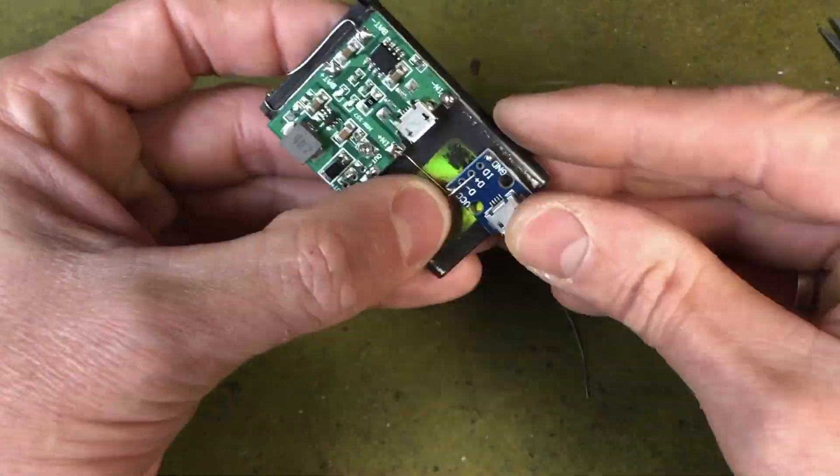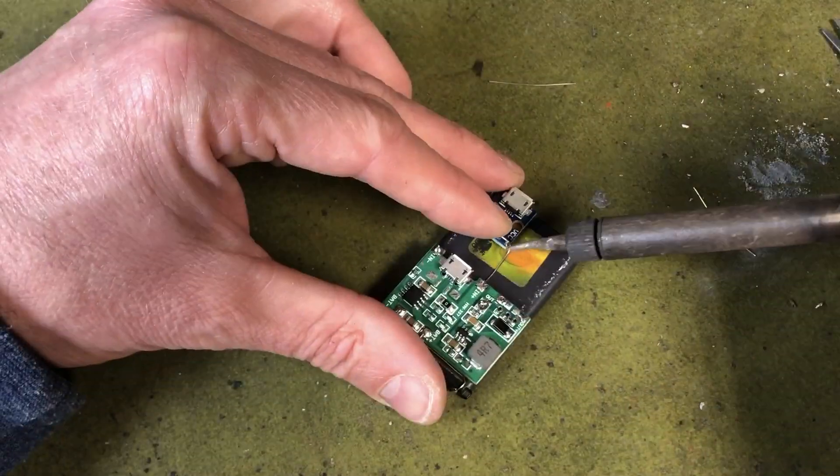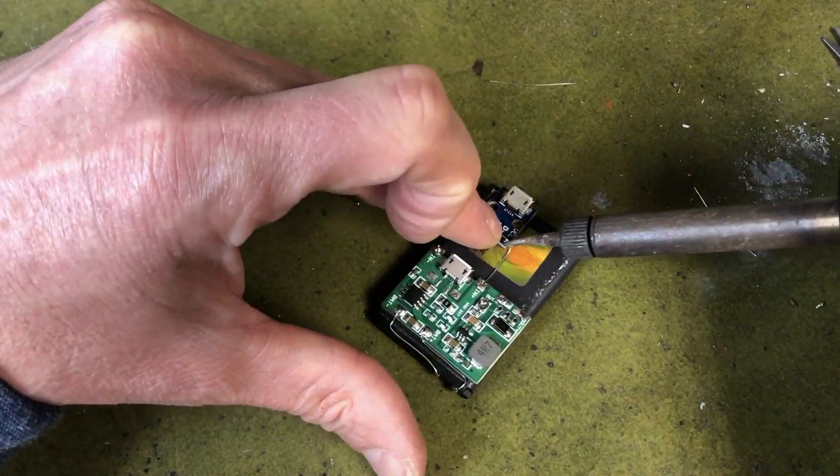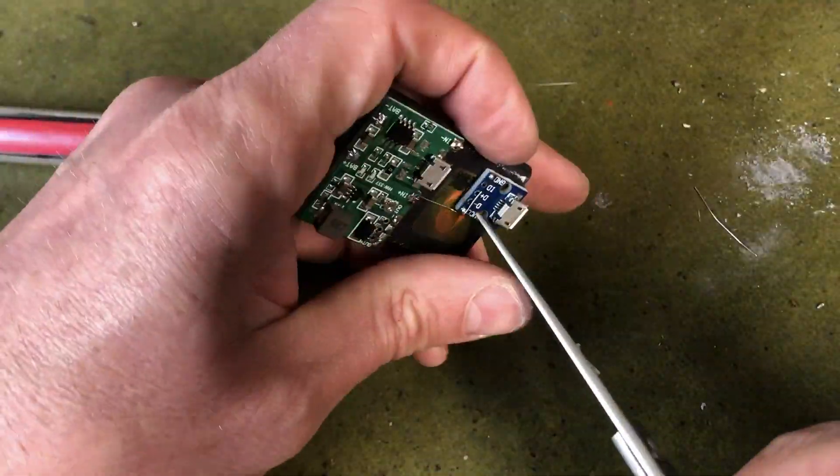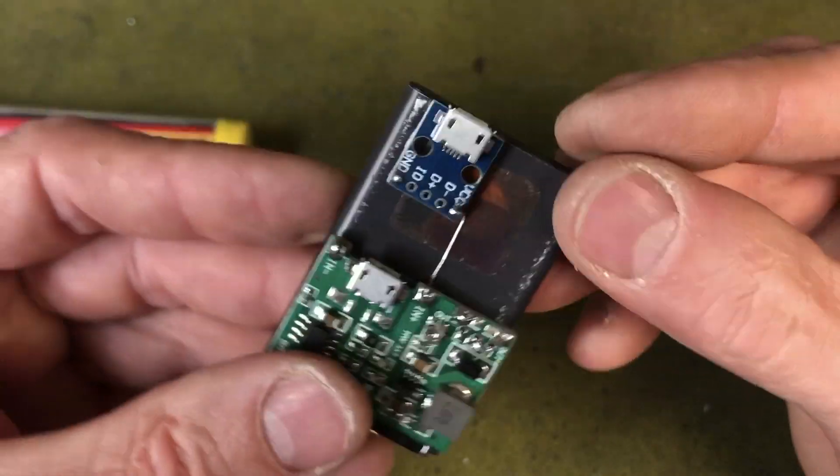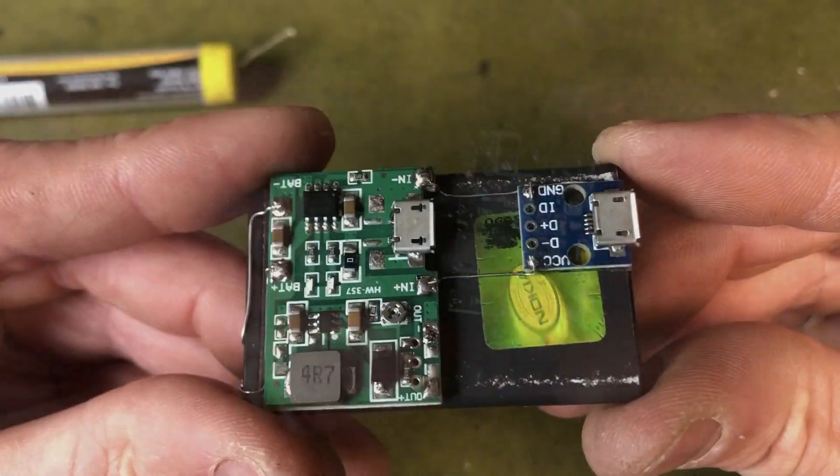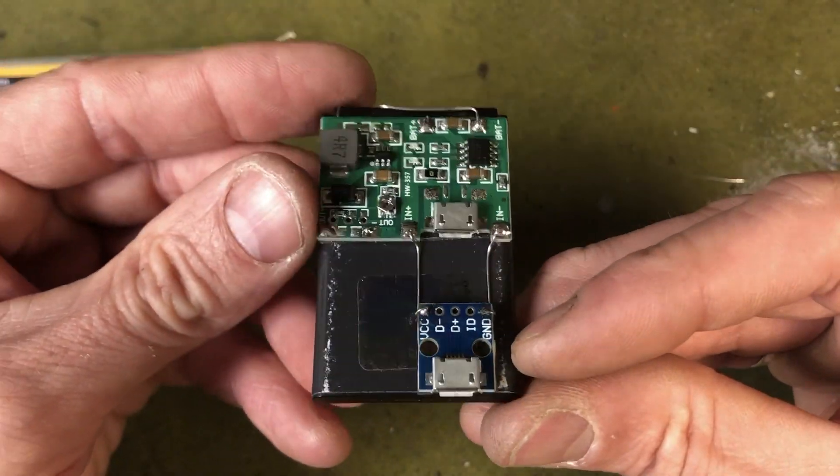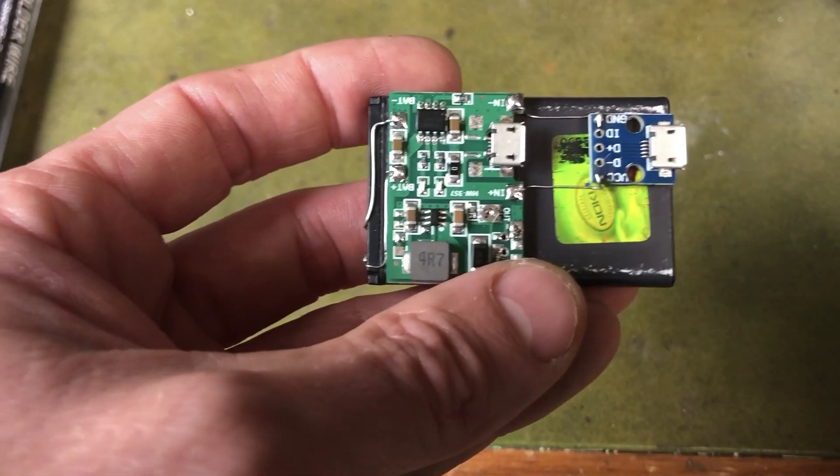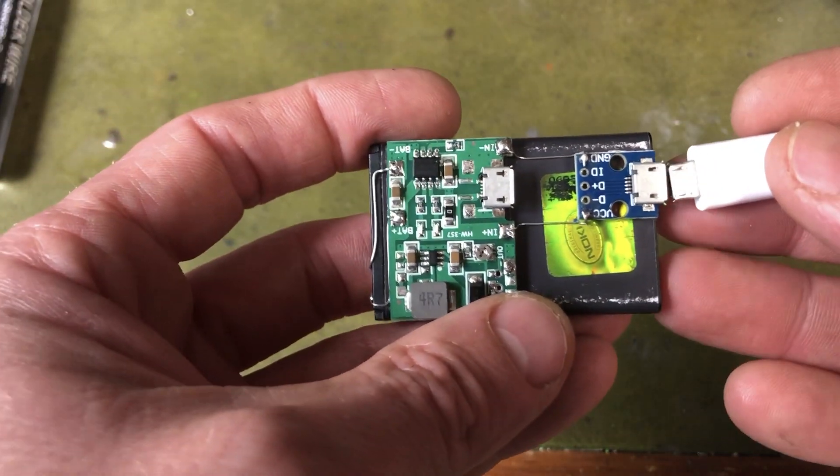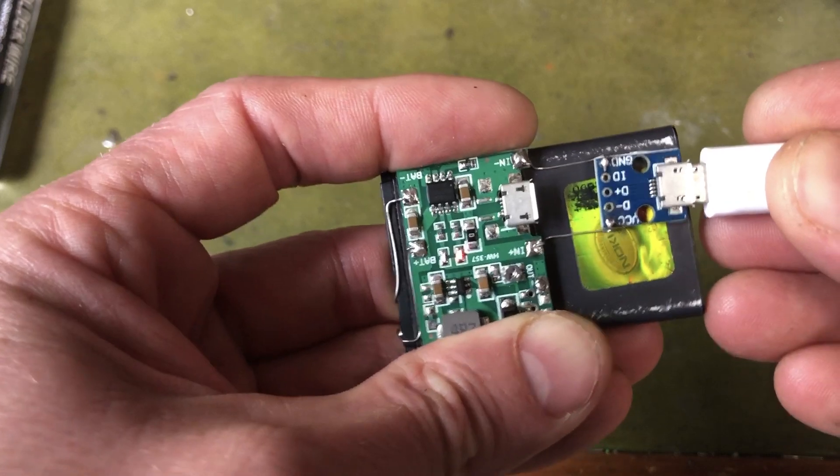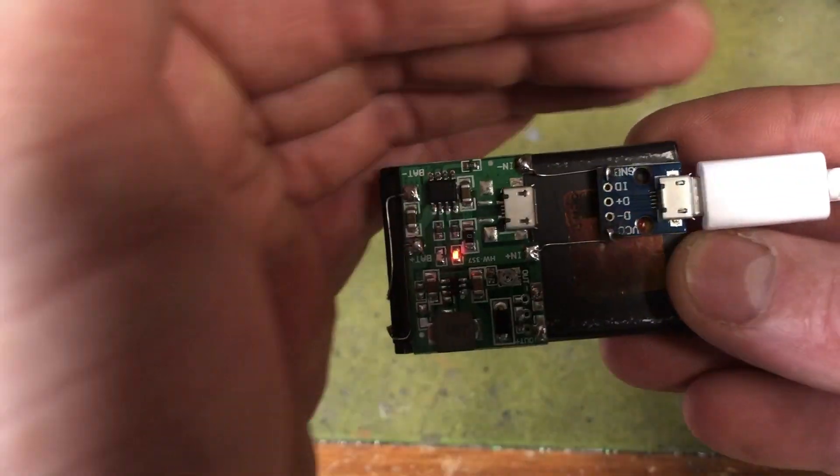There's a couple of solder points on the module for the input voltage input and charging input, so it's quite easy to extend it out and add this adapter. Doesn't need any modifications at all. So yeah, a couple of resistor wires and I just double-sided tape that down.